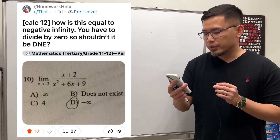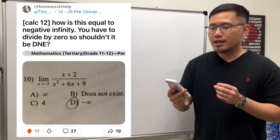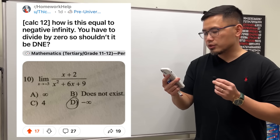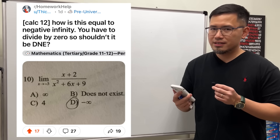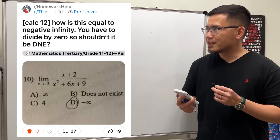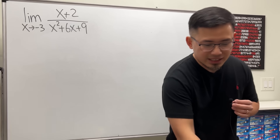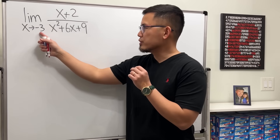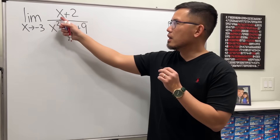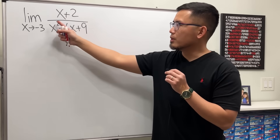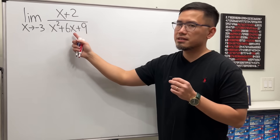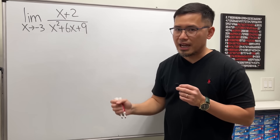How is this limit equal to negative infinity? You have to divide it by 0, so shouldn't it be D and E? Alright, let's have a look. Here we have the limit as x approaching negative 3 of x plus 2 over x squared plus 6x plus 9.